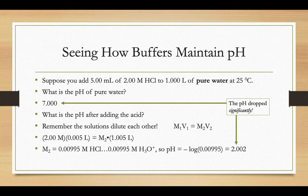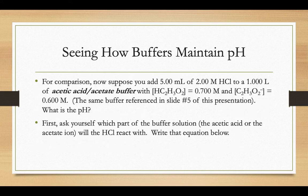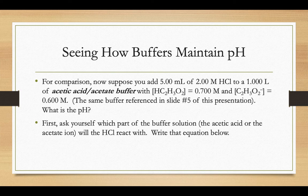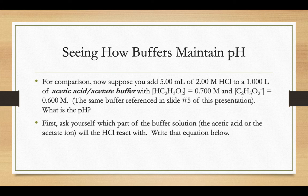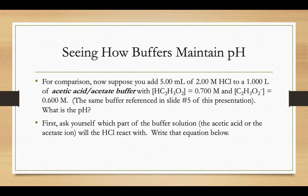But what if we added the same amount of acid instead of adding it to one liter of pure water? What if we added it to one liter of a buffer? So now we're adding it to an acetic acid-acetate buffer. And just for reference, I'm going to use the exact same buffer that we used in a previous problem of this presentation, where we had 0.7 molar acetic acid and 0.6 molar acetate ion. What if we added five milliliters of acid to that? What's the pH?